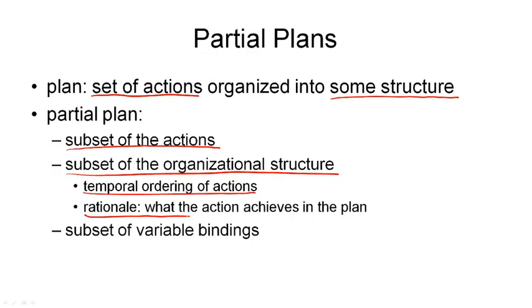And finally, as part of the planning process, we have used operators and turned them into actions. That means we've introduced variable bindings. We've assigned values to the parameters of the operators to turn them into actions. Now we can use a subset of these variable bindings to create a partial plan. So this tells us there are four different ways of making a plan partial, namely by including only a subset of the actions, a subset of the temporal constraints, a subset of the rationale, or a subset of the variable bindings.